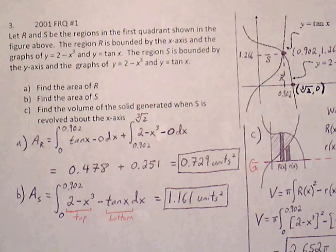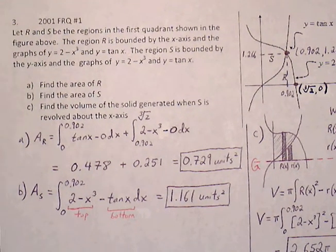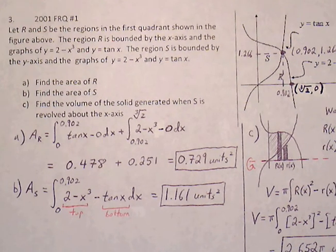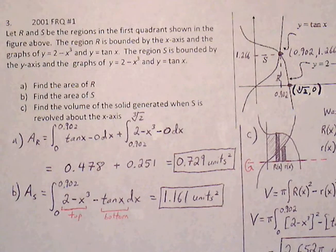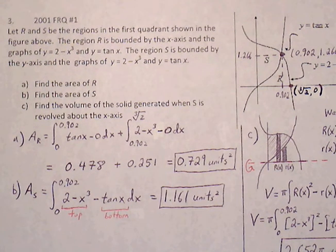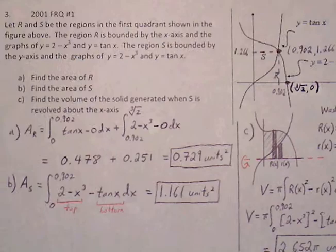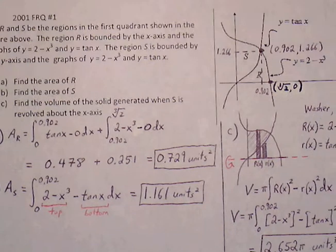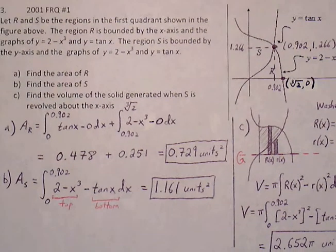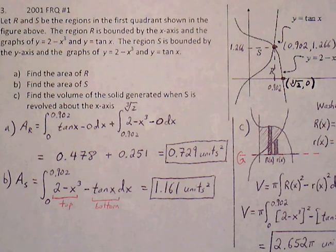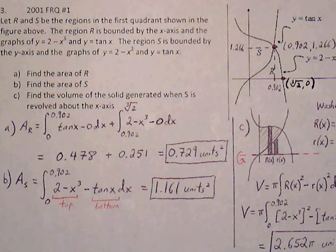Let's go through the back page of Chapter 7 Review Worksheet number 1. This is number 3. It says let R and S be the regions in the first quadrant shown in the figure. The region R is bounded by the x-axis and the graph of 2 minus x cubed and y equals tangent of x. The region S is bounded by the y-axis and the graphs of 2 minus x cubed and y equals tangent of x.